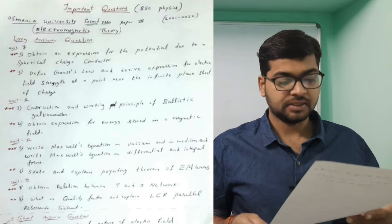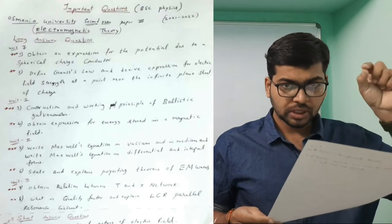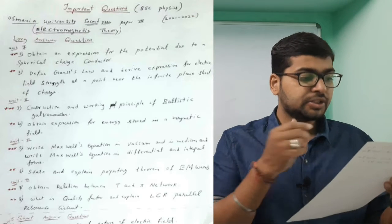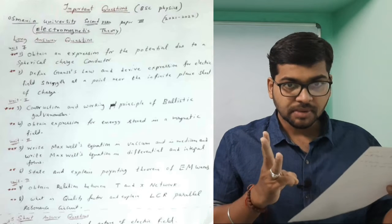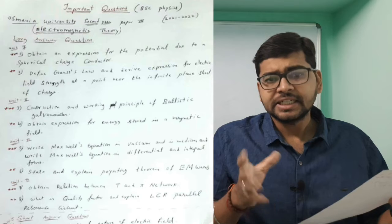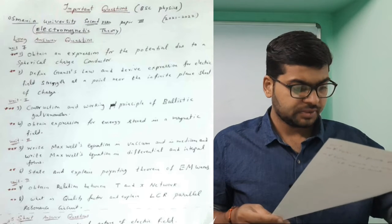Coming to fourth unit, obtain the relationship between PI and T and PI networks. This is also very much important. In every unit, an important question. The star marking - three star mark means compulsory or 90 percent it will come.